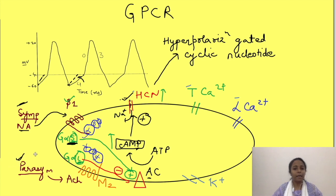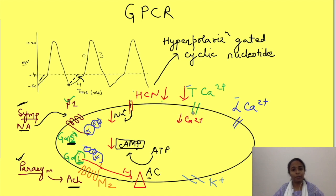On the other hand, parasympathetic activation has an opposite effect. Acetylcholine released from vagus causes activation of GI type of proteins which inhibits adenyl cyclase leading to decreased production of cAMP. Thus it leads to decreased opening of HCN channels and also T type calcium channels. So obviously less sodium ions and less calcium ions will be able to enter the cells leading to decrease in the slope of the potential.